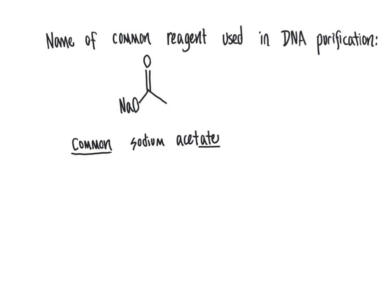Sodium acetate is a little different from the strict "oate" pattern because the "o" isn't included — that's why it's a common name rather than an IUPAC name. If you've done any DNA purification, sodium acetate is likely a reagent you've used. The IUPAC name still has sodium at the front, but since a two-carbon carboxylic acid is ethanoic acid, the deprotonated form is ethanoate — giving us sodium ethanoate. The "oate" suffix signals a deprotonated carboxylic acid paired with a metal cation.